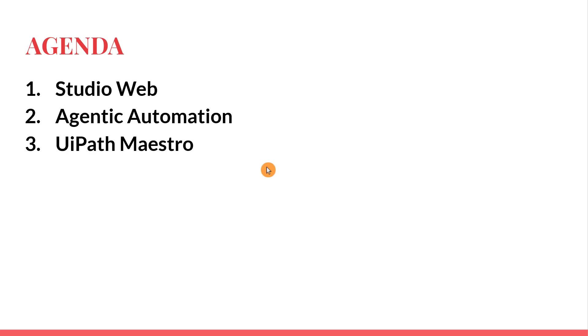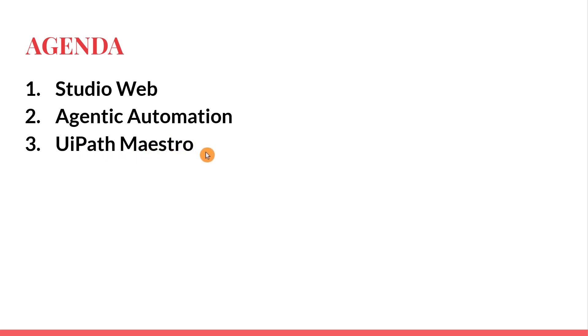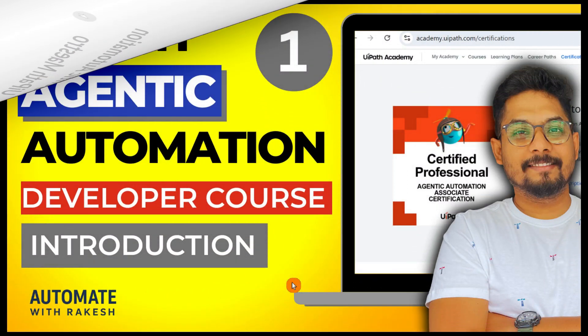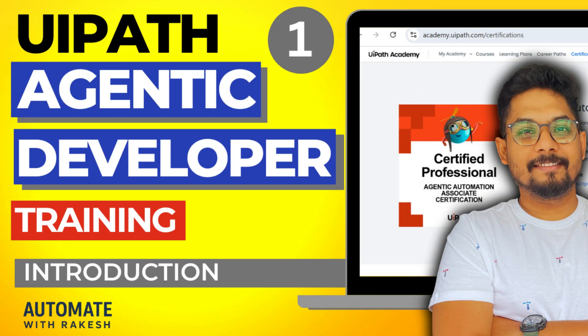And in the third phase is UiPath Maestro. This is the orchestration governance body where you would be managing your agents, your processes, your robots, and humans. So this is also a very, very important tool for you to learn. We will move on to the next chapter in the UiPath Agentic Automation playlist.